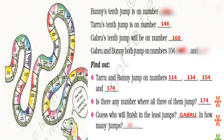Tharu and Banni jump on the same numbers: 114, 134, 154, and 174. There is a number where all three of them jump together. Gabru finishes in the least number of jumps — in 8 jumps.